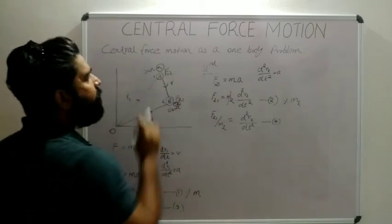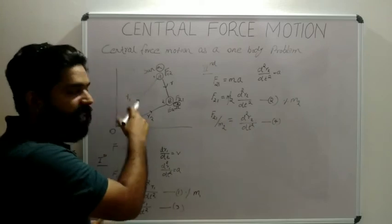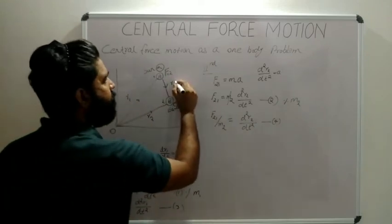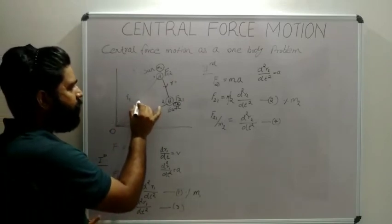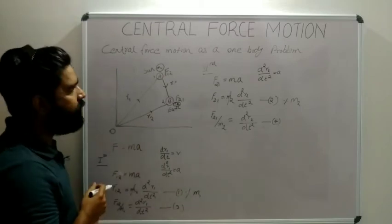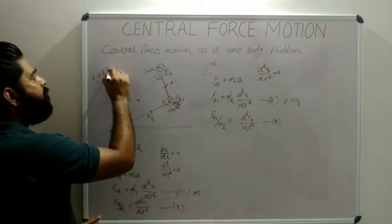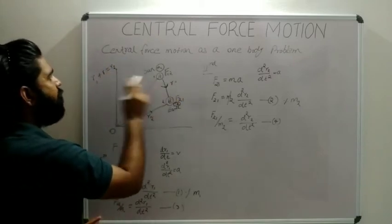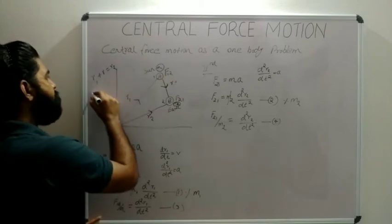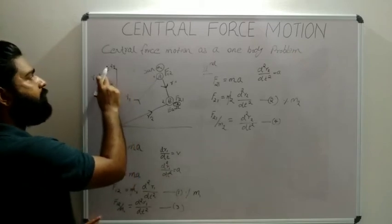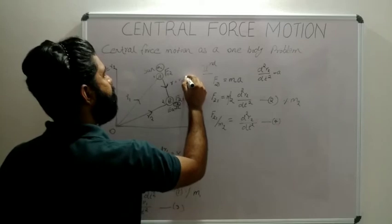The position vector of B with respect to A is r. According to the vector summation rule, r1 and r are in the same direction while r2 is in the opposite direction, so r1 + r = r2, which means r = r2 − r1.